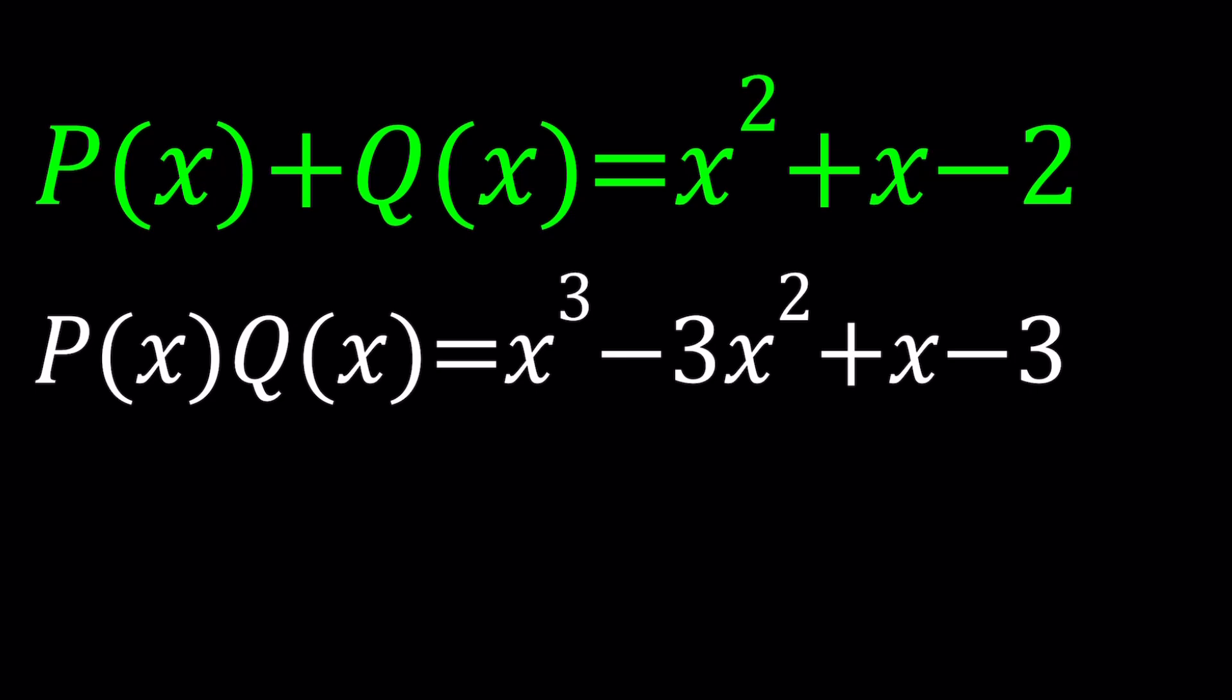So we have two polynomials: P(x) + Q(x) = x² + x - 2, and their product is equal to a cubic as you can see here. I'll be presenting two methods and let's start with the first one.